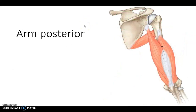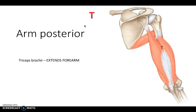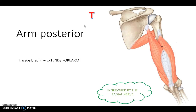Thinking about the arm posteriorly, there's just one muscle here - possibly the easiest compartment to remember. It's the triceps brachii, which has three heads and extends the forearm. So the anterior arm flexes the forearm and the arm, while the posterior arm extends the forearm. The posterior compartment is innervated by the radial nerve.